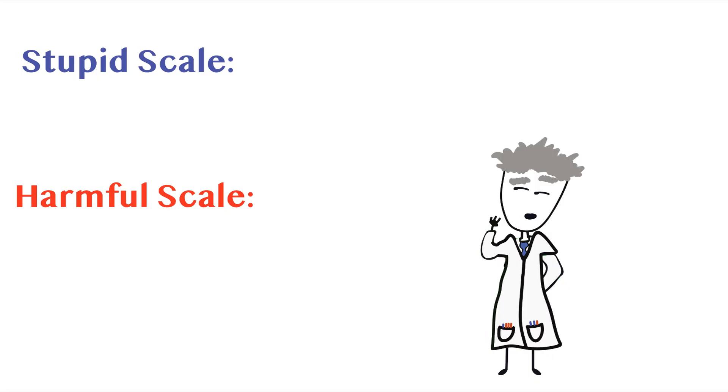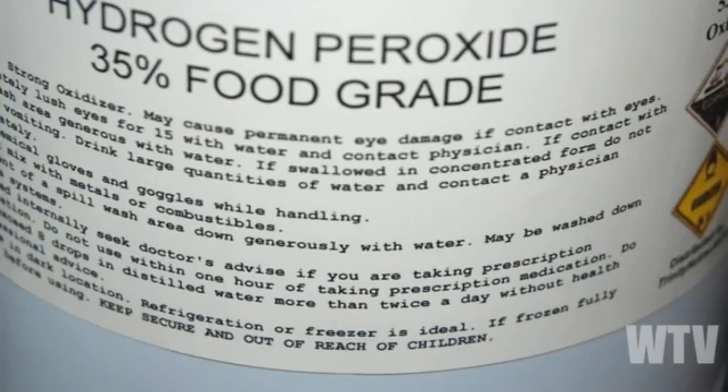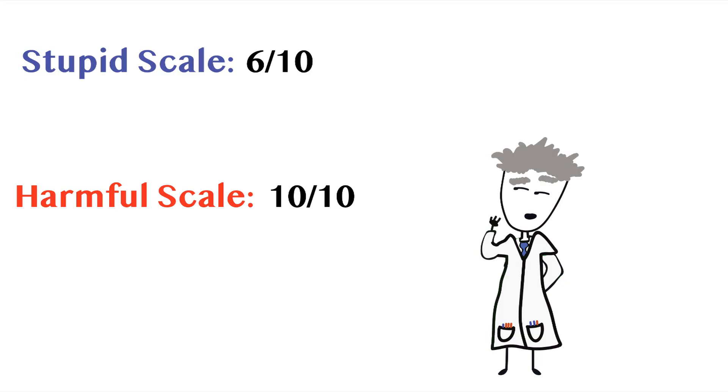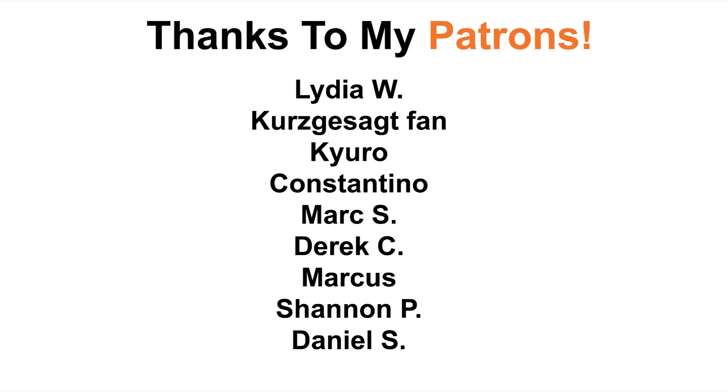On the stupid scale, hydrogen peroxide therapy is at a 6 out of 10. And on the harmful scale, it's at a 10 out of 10, as the average untrained person making and drinking their own dilutions of caustic 35% hydrogen peroxide just sounds like a trip to the ER. And just a quick shout out to my patrons for voting for this video and supporting my future projects. Thank you for watching and stay tuned.